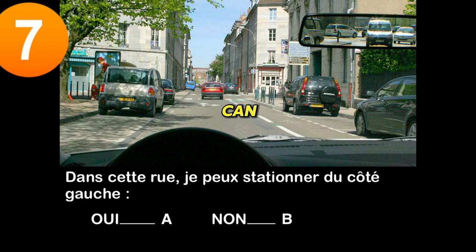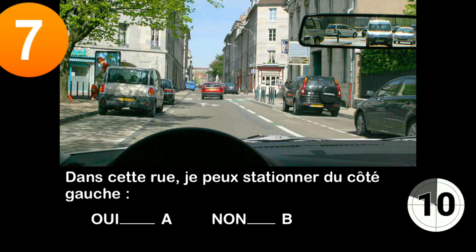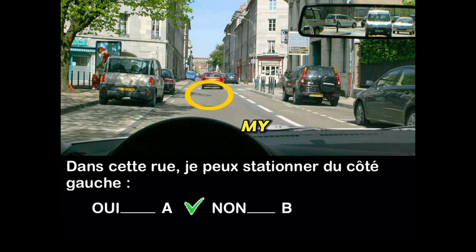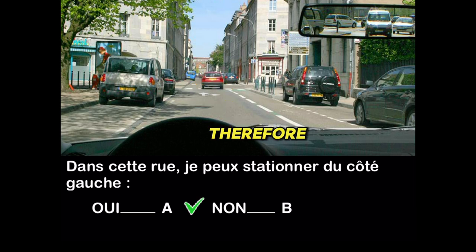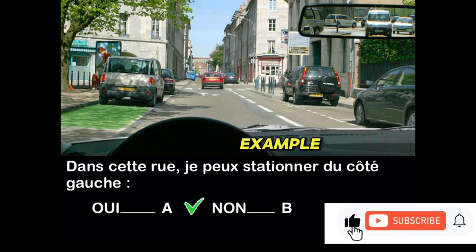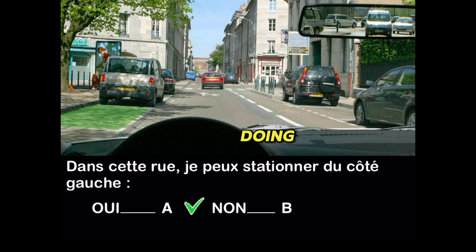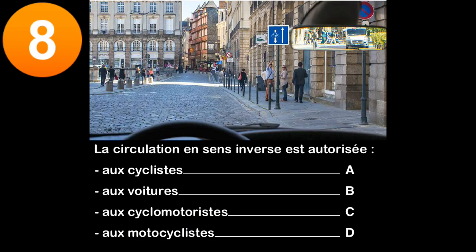Question seven: in this street, can I park on the left side? Yes (A) or no (B)? The directional arrows on my lane confirm that the street is one-way. In this street I can therefore park on the left side, for example in the location behind the first vehicle. Nothing prevents me from parking in the right location between the two cars either.